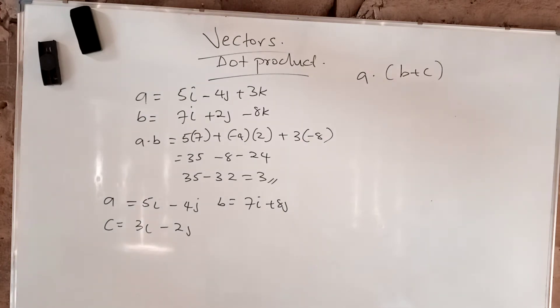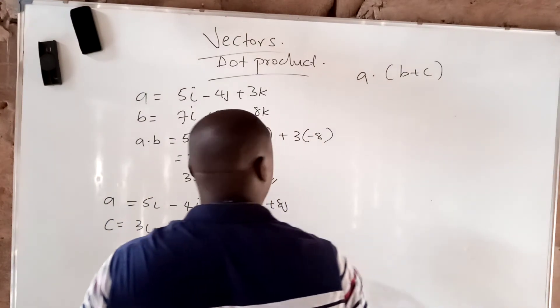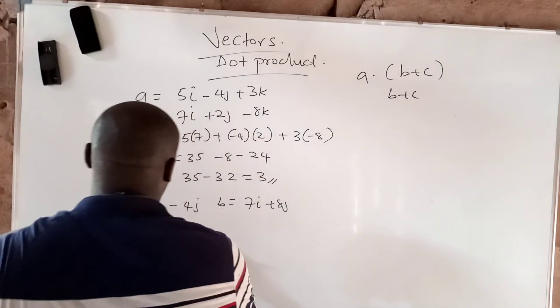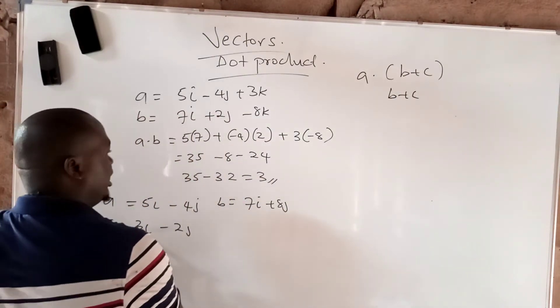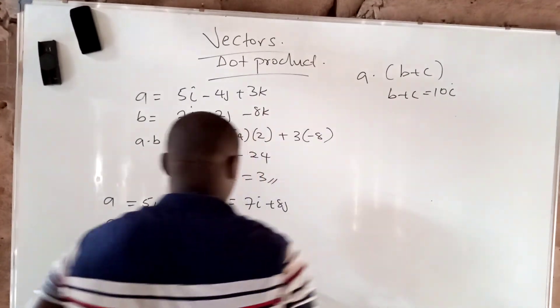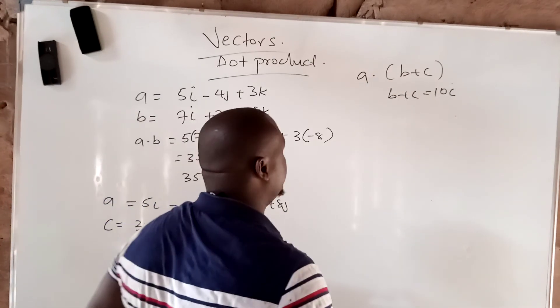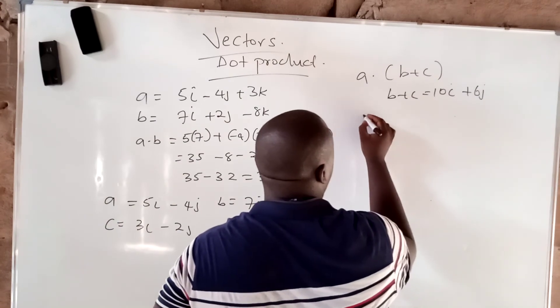You will now put them together and get your dot product. So b plus c should give you 7i plus 3i, which gives 10i, and then 8j plus minus 2j to give you plus 6j.